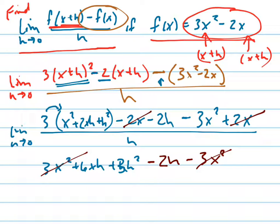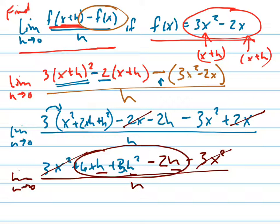I can now factor an h out of all three of these things. Remember, this was all over h, and it's the limit as h goes to zero. So when I factor out an h, I get 6x + 3h - 2 all over h. Those h's cancel.